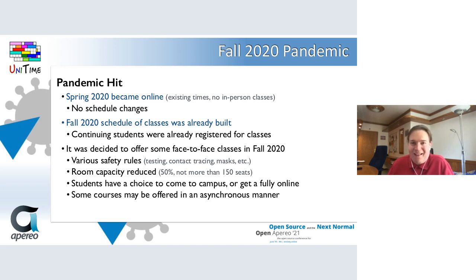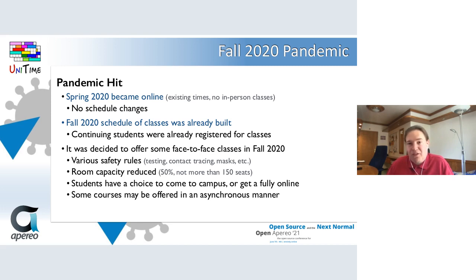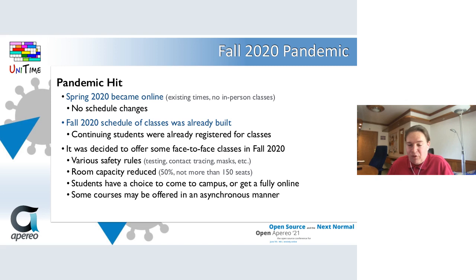For spring 2020, the pandemic hit in the middle of the term, so all classes just became online following the original schedule times — we did not do any rescheduling. However, for fall 2020, the pandemic hit around the time when class schedules were already published and most continuing students already had their class schedules. After long discussions, it was decided that Purdue would still offer some face-to-face classes, but with reduced capacity and safety rules like regular testing, contact tracing, and mask mandates. Room capacities were reduced to about 50% with a cap of 150 students per room.